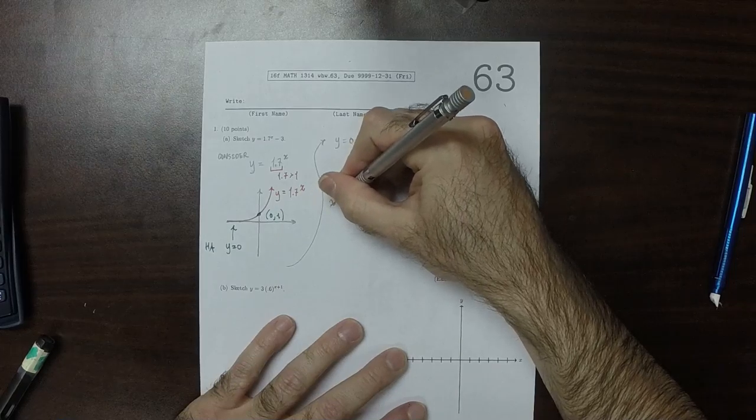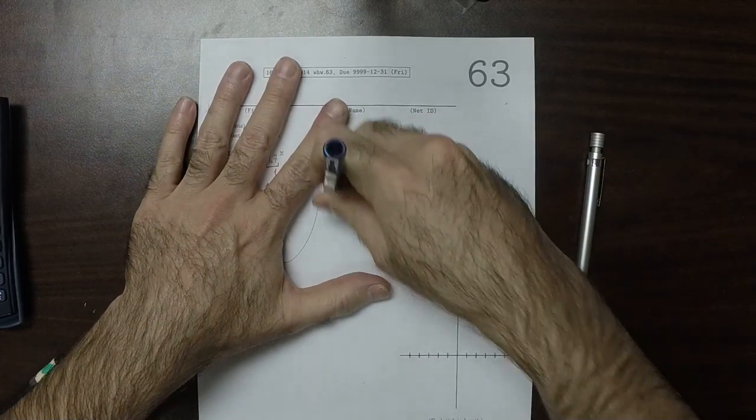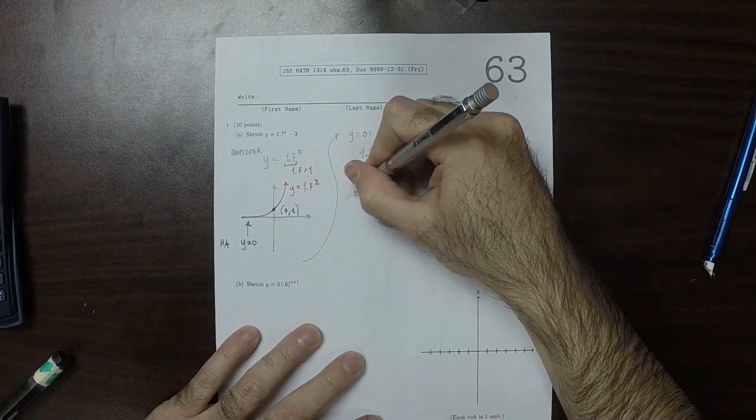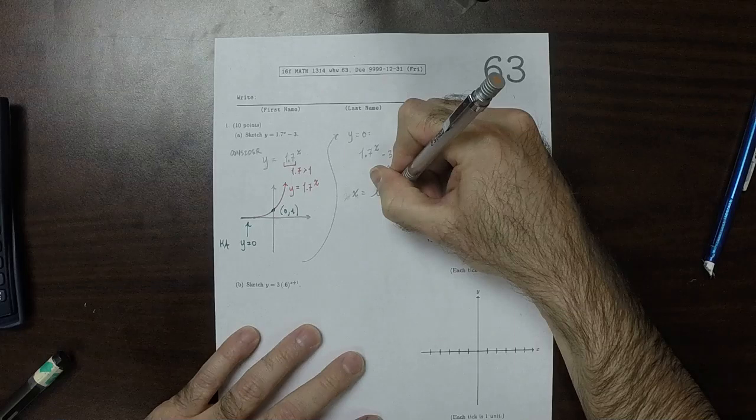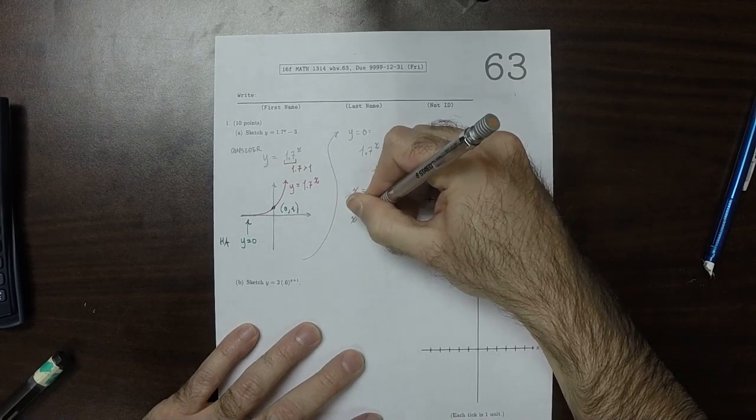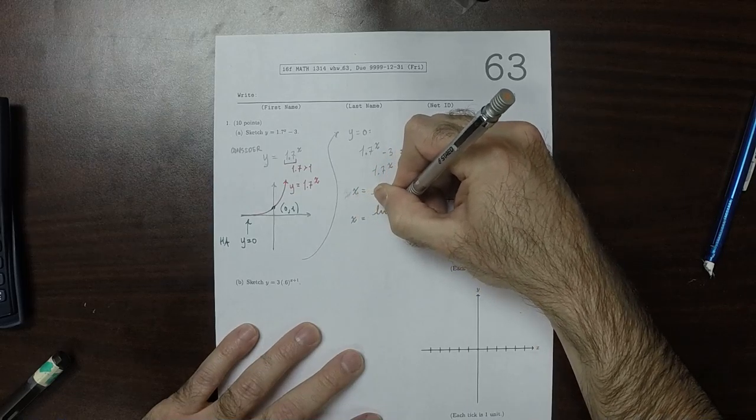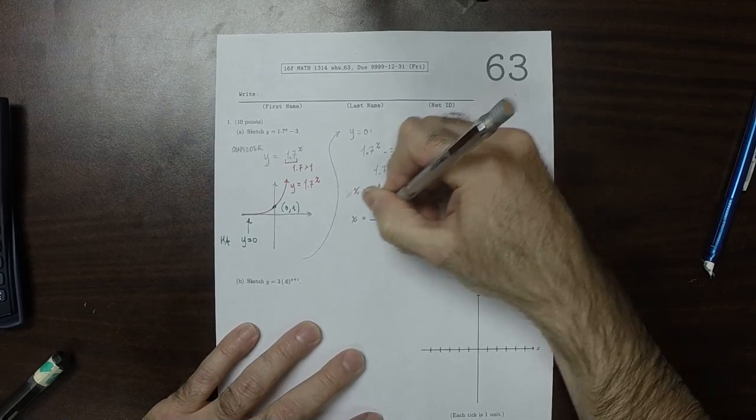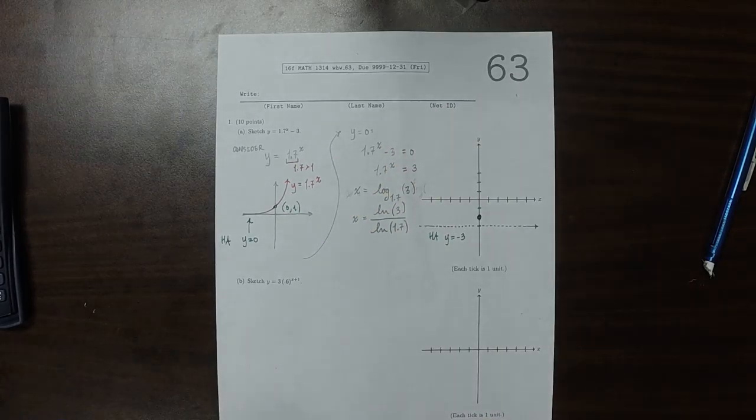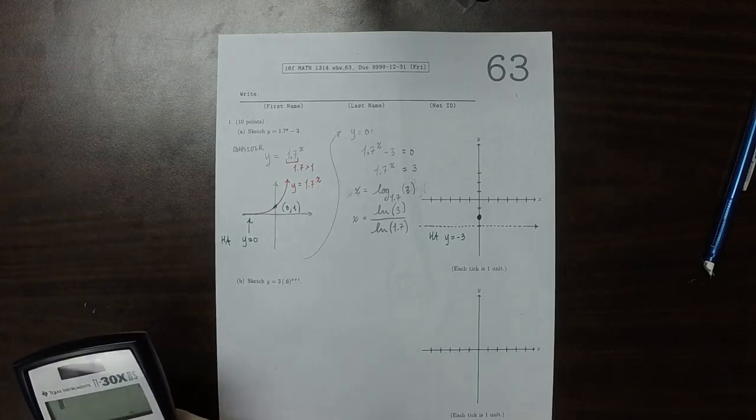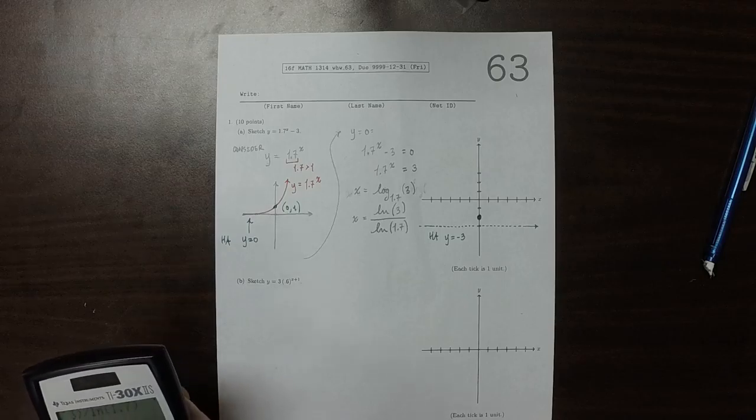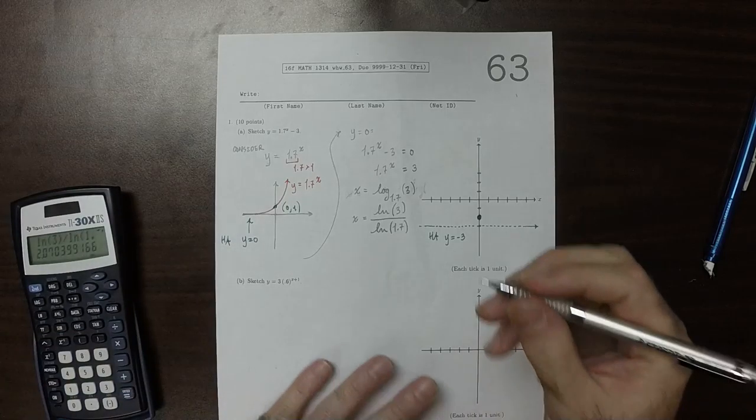So x is log base 1.7 of 3, and then using the change of base formula, that would be natural log of 3 divided by natural log 1.7. And so then putting that into the calculator is 2.07.